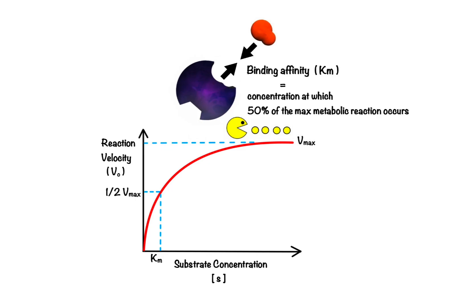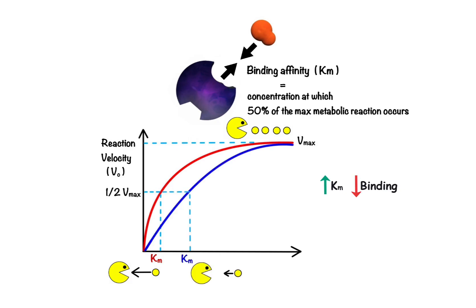Km, on the other hand, can be thought of as the binding affinity of the substrate for the enzyme. Naturally, the substrate is more likely to be caught by the enzyme and transformed into the product if it can bind the enzyme with a higher affinity. So a small Km indicates a strong binding, meaning Vmax will be reached at lower substrate concentration. On the other hand, a high Km indicates a weak binding, and Vmax will only be reached if the substrate concentration is high enough to saturate the enzyme.